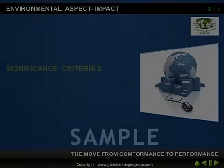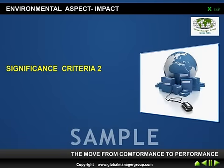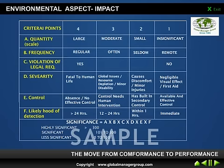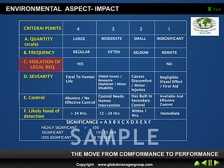Let me now explain the more commonly used popular method of evaluating significant criteria, based on six environmental criteria points: quantity, frequency, and violation of legal requirement. These three are the same as we discussed in the previous slide — evaluation method two, method one.